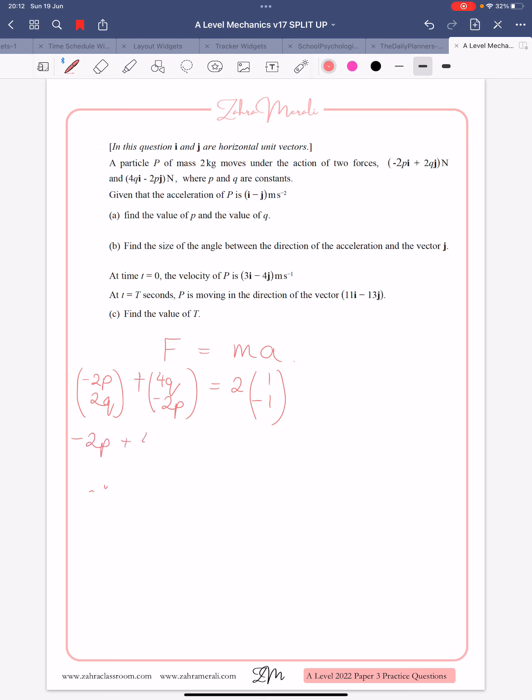So this gives us two equations. We're equating the I's and we're equating the J's. So minus 2P plus 4Q equals 2, and 2Q minus 2P equals minus 2. I am going to rearrange the top one. So if I call that 1 and 2, I'm going to rewrite 1 as 4Q minus 2P equals 2.